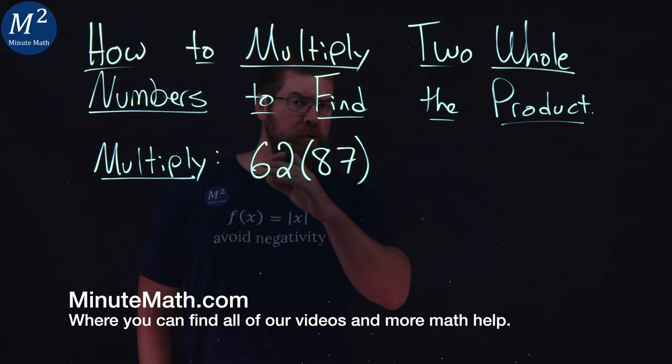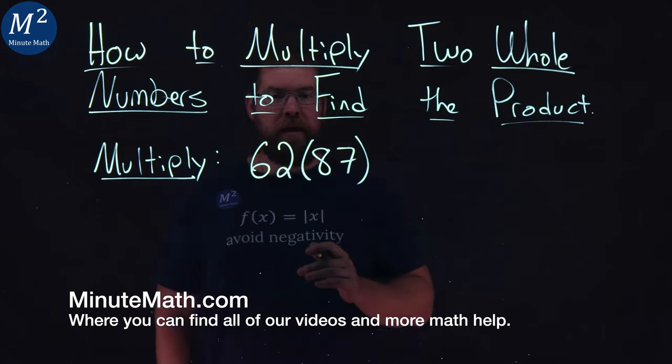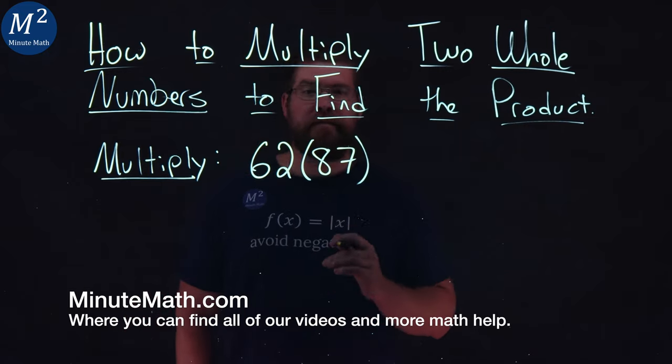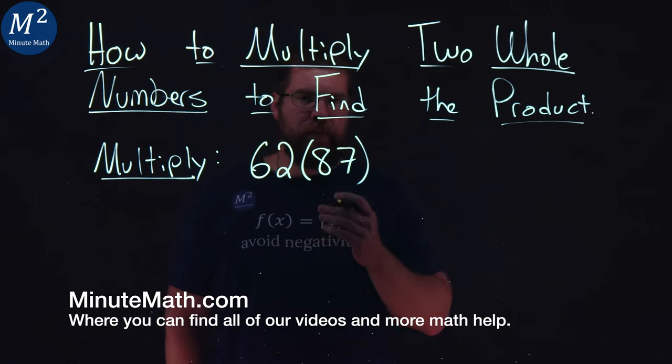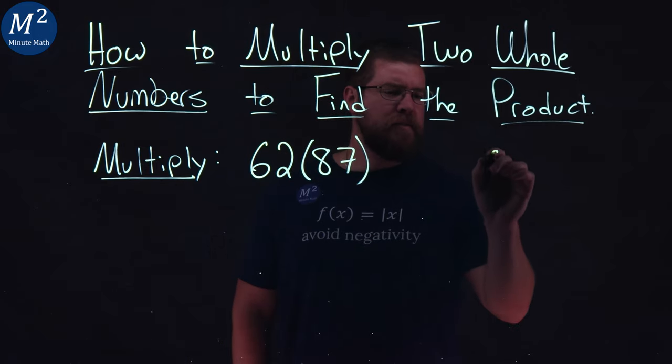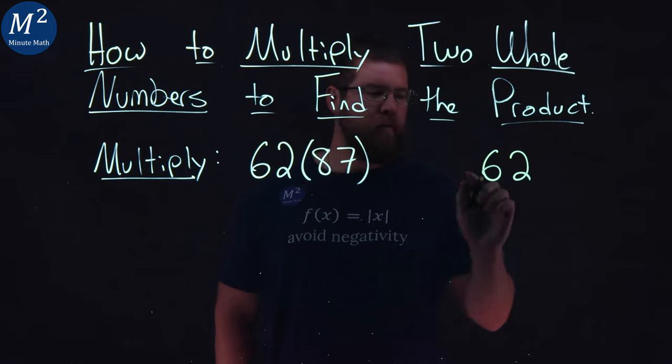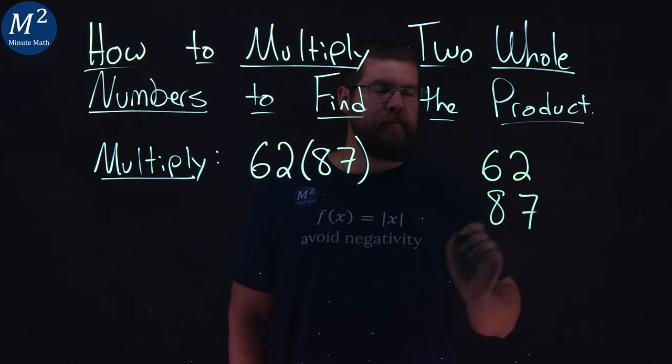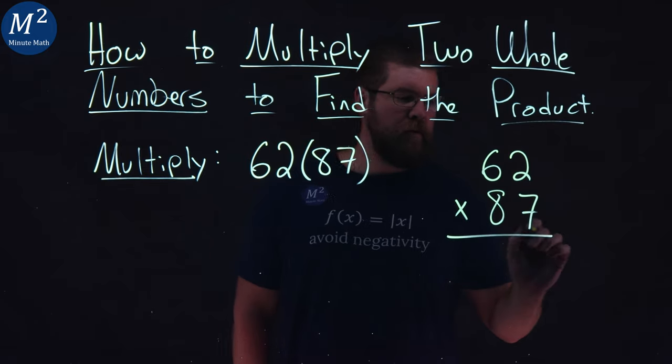We're given two two-digit numbers here that we need to multiply, 62 and 87. We're going to multiply this the traditional method. I'm going to take a 62 right here and underneath I'm going to write my 87 and we're going to multiply these two numbers.